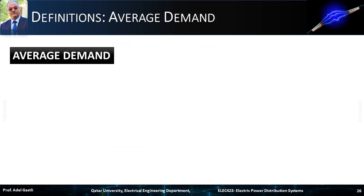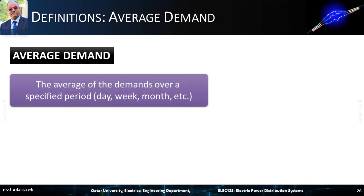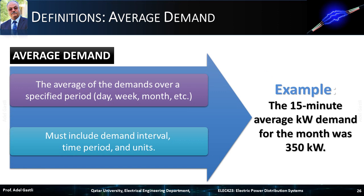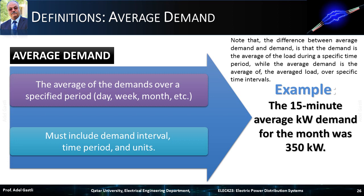Now let's define average demand, which is the average of the demands over a specified period that could be day, week, month, etc. Similarly, it must include demand interval, time period, and units. For example, the 15-minute average kilowatt demand for the month was 350 kilowatts. Note that the difference between average demand and demand is that demand is the average of the load during a specific time period, while average demand is the average of the averaged load over specific time intervals.